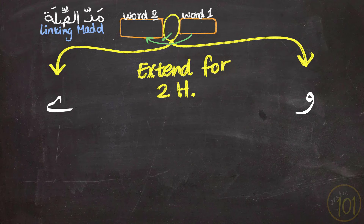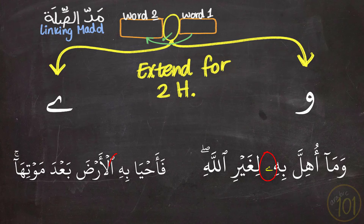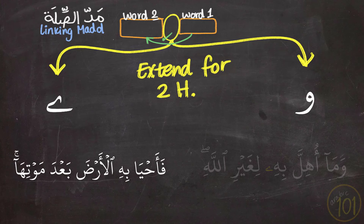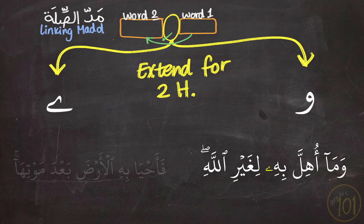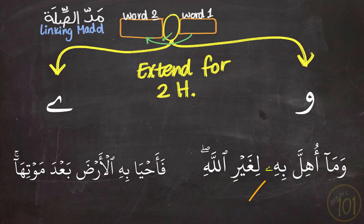I'm going to start with two examples — one with and the other without a Linking Mad — so you can hear the difference. The first example contains a Linking Mad, and the second contains the same word but without a Linking Mad. In the first example, we said بِهِ with an extension of two Harakāt because of the symbol of the Linking Mad. But in the second example, we said بِهِ without any extension because there is no sign of a Linking Mad.